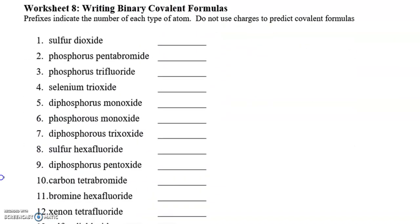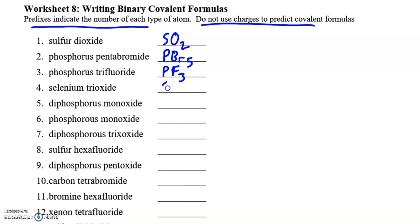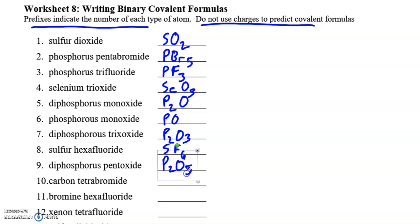We'll keep going on to worksheet eight, so we're going to write some formulas. Again, do not use charges — just the prefix tells you the number of each atom. So sulfur dioxide is SO₂, phosphorus pentabromide is PBr₅, phosphorus trifluoride is PF₃, selenium trioxide, diphosphorus monoxide, phosphorus monoxide, diphosphorus trioxide, diphosphorus pentoxide, and so on.